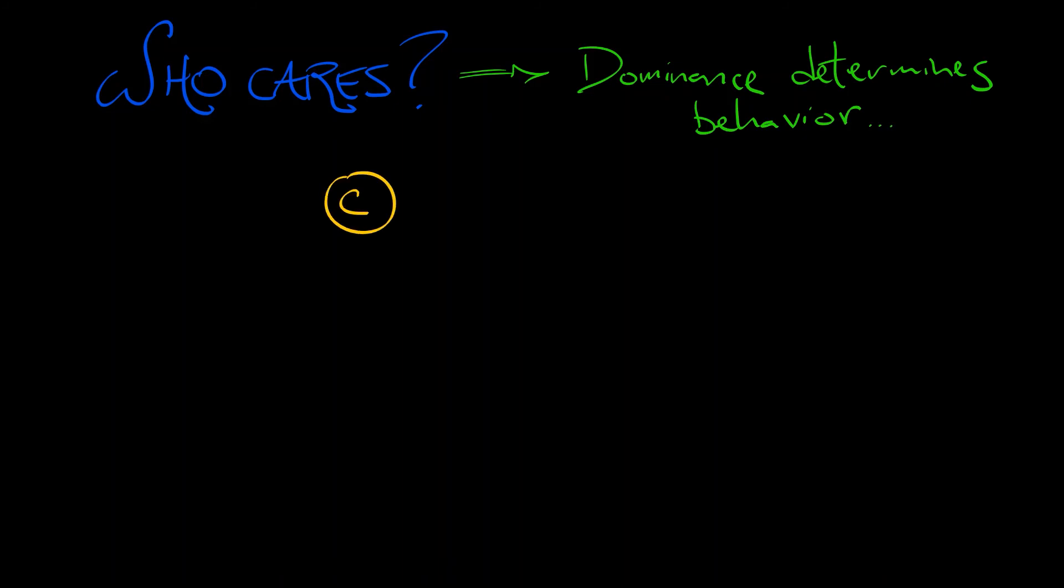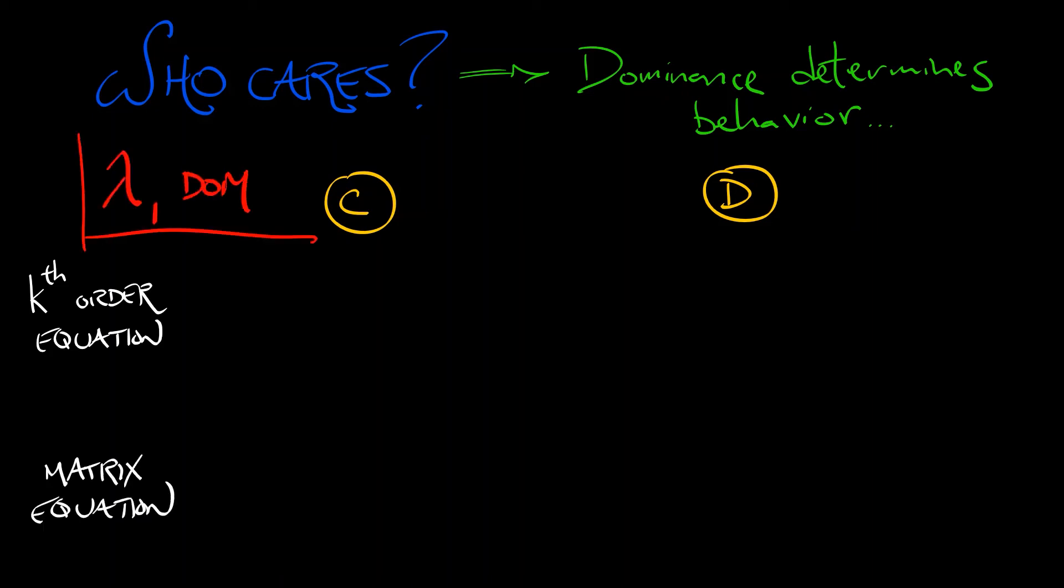Whether we're in a continuous or a discrete time system, whether we've got a k-th order equation, or a matrix equation, if your linear system has a dominant eigenvalue, lambda 1, then you can say what the long-term behavior is going to look like.